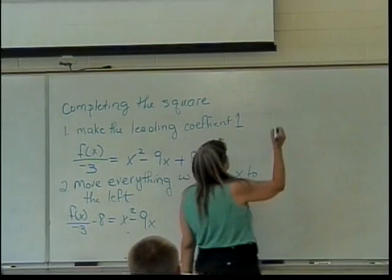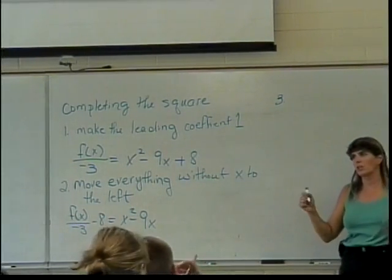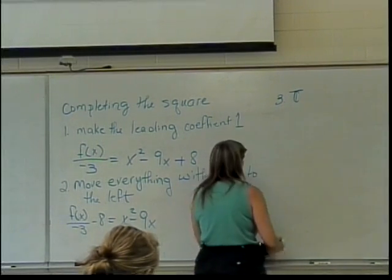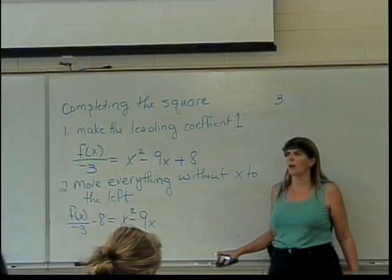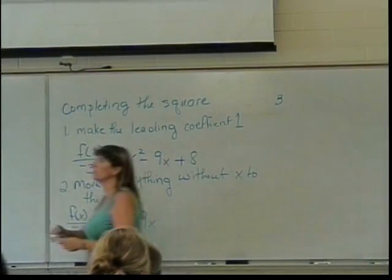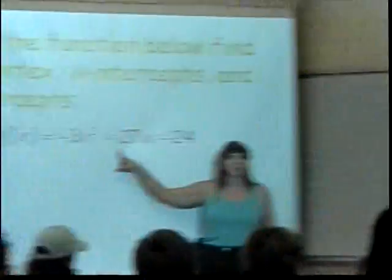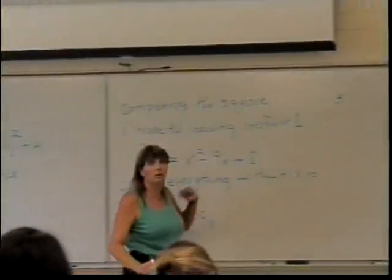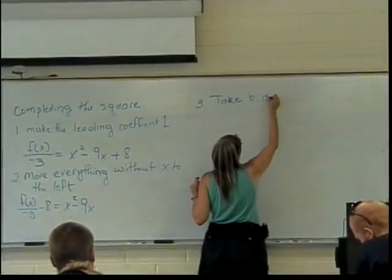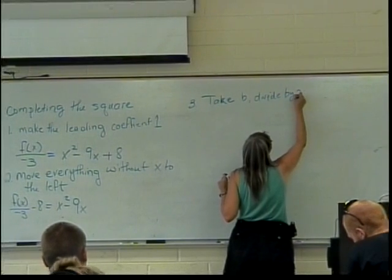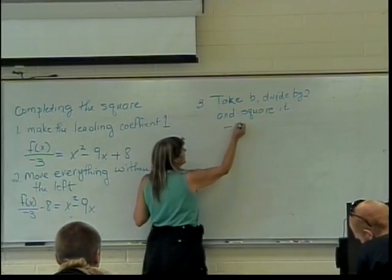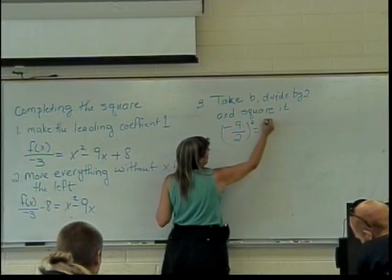Step three. This is where we're actually getting close to actually doing something related to completing the square. We want to take the coefficient, so take the coefficient of the x. What's the letter that we usually use to represent the coefficient of the x? Do you guys remember what letter when you use your quadratic formula? No. No? This one's a, right? This one's a. This one is b. So we're going to take the b, but this new b is a negative nine. So take b, divide it by two, and square it. So that means I'm going to take negative nine divided by two and square it, which gives me 81 over four.